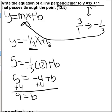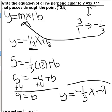Now all we have to do is substitute the b in to get our final equation. y equals negative 1 third x plus 9 is the line perpendicular to our original line passing through (12,5).